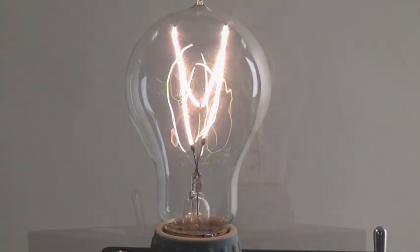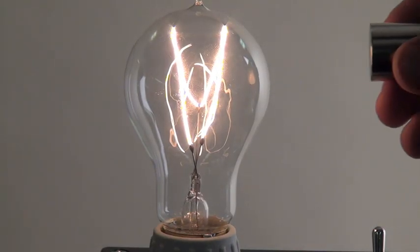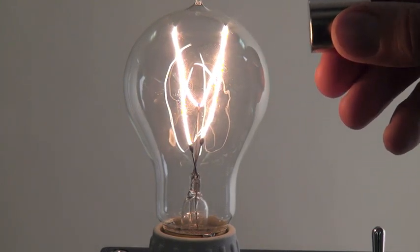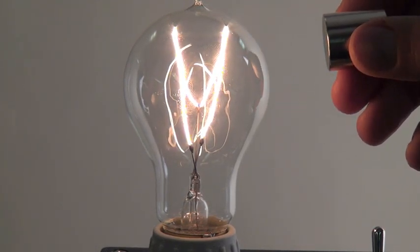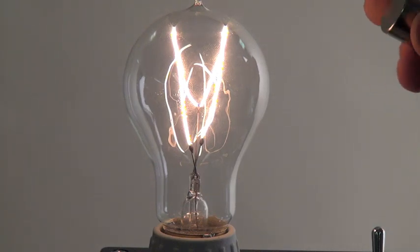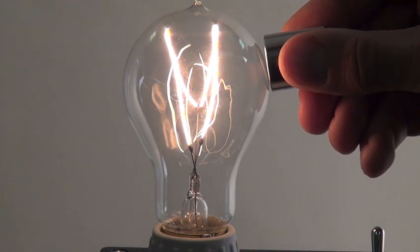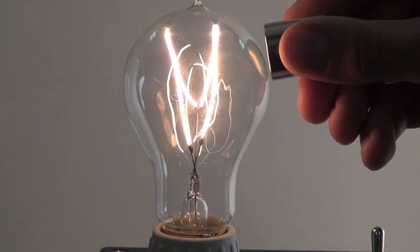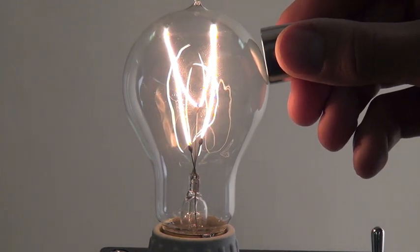Explain to the students that you will now bring the neodymium magnet close to the bulb and its filament. They will notice the filament bending in one direction. Switch the poles by turning the magnet around and notice the filaments bending in the other direction.